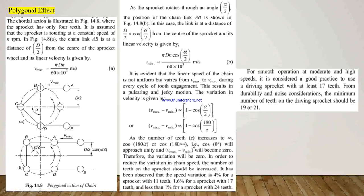The variation in velocity is proportional to (1 − cos(α/2)). As the number of teeth z increases to infinity, cos(180/z) approaches unity and v_max − v_min approaches zero, so the variation becomes zero. To reduce the variation in chain speed, the number of teeth on the sprocket should be increased. The speed variation is 4% for a sprocket with 11 teeth, 1.6% for 17 teeth, and less than 1% for 24 teeth. For smooth operation at moderate and high speeds, it is good practice to use a driving sprocket with 17 teeth, and from durability and noise considerations the minimum number of teeth should be 19 or 21.